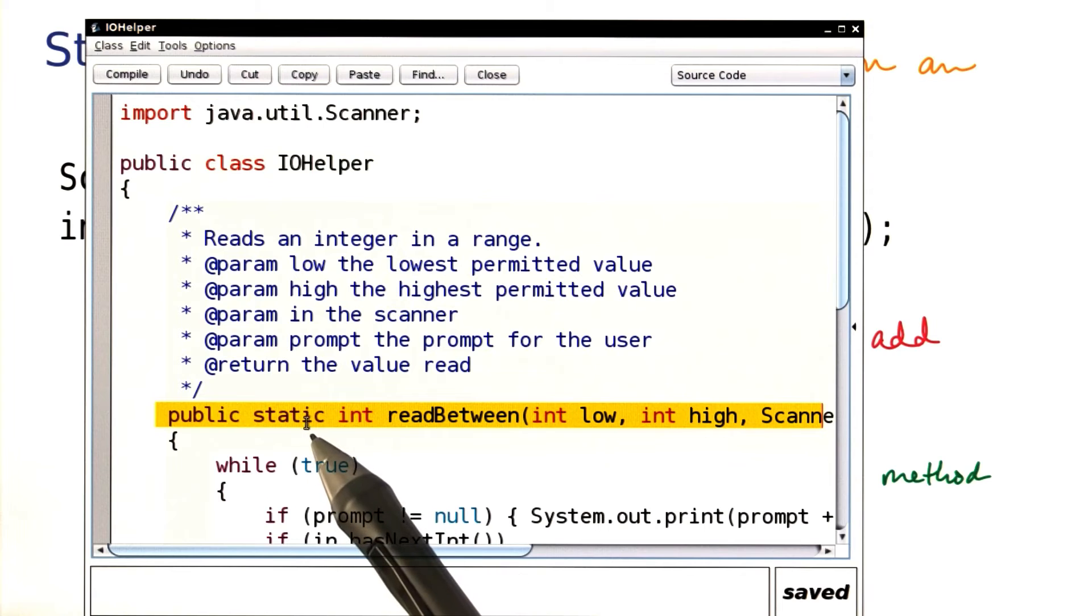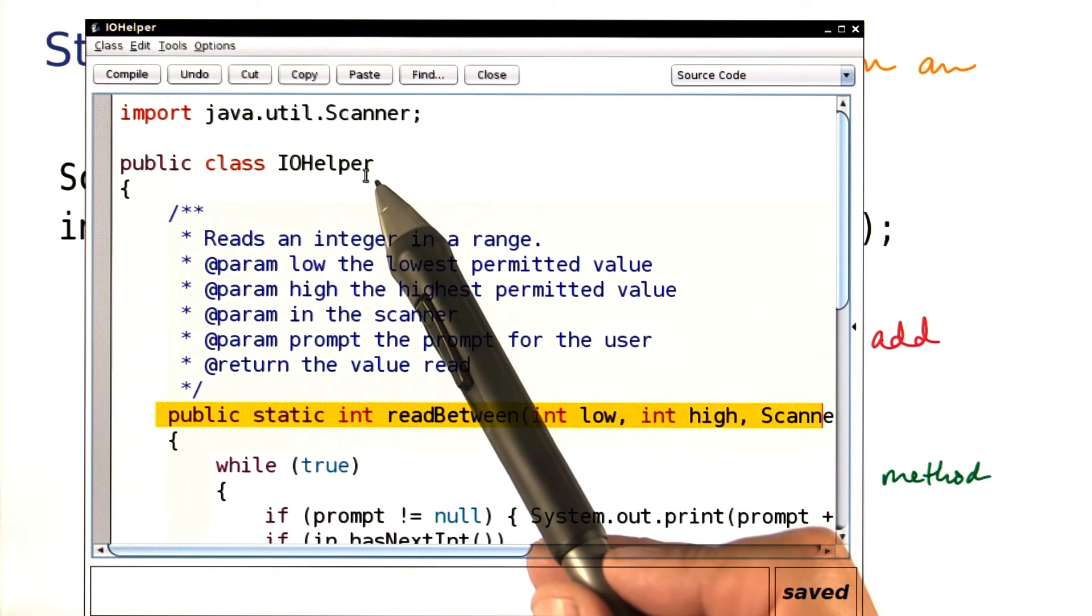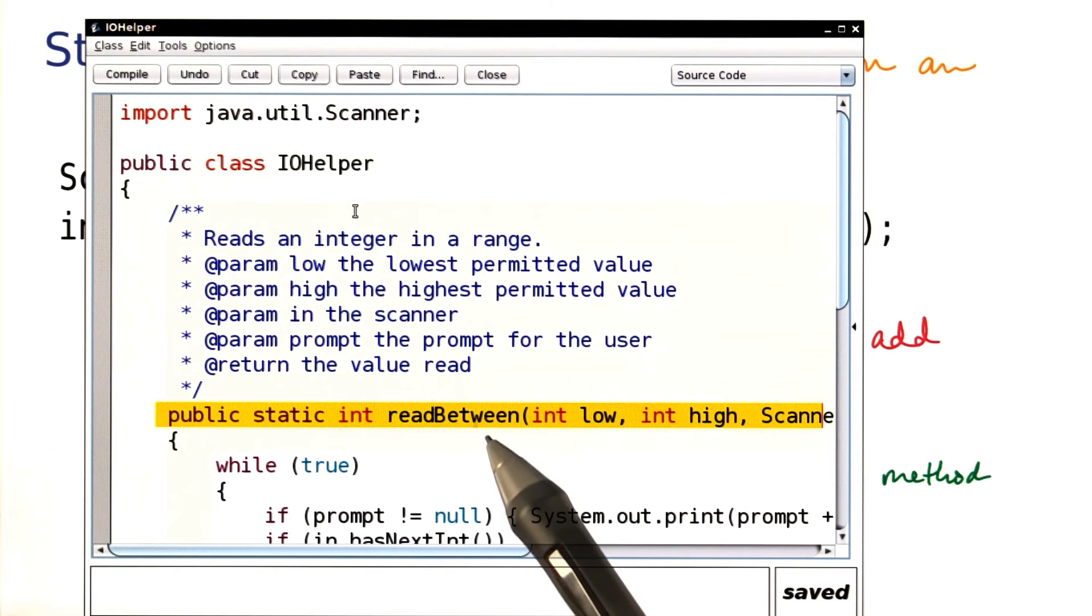And again, it's a static method because I'm not going to actually make any objects of the IO helper class. I just want it to be the home for this method.